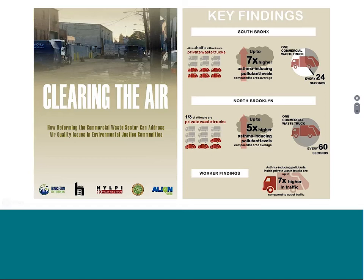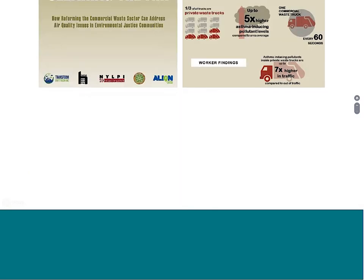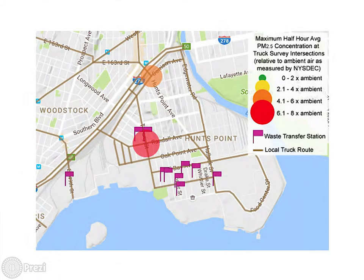This is a map of the South Bronx. The maroon-colored flags are waste transfer stations — the South Bronx and North Brooklyn have the densest concentrations and collectively handle about 80% of all waste moving through waste transfer stations in New York City, which is obviously very inequitable. The brown lines are truck routes, forming a very dense network. The big colored circles represent the two intersections we measured at, showing maximum half-hour PM2.5 concentrations of between four and eight times higher than the closest DEC monitoring station.